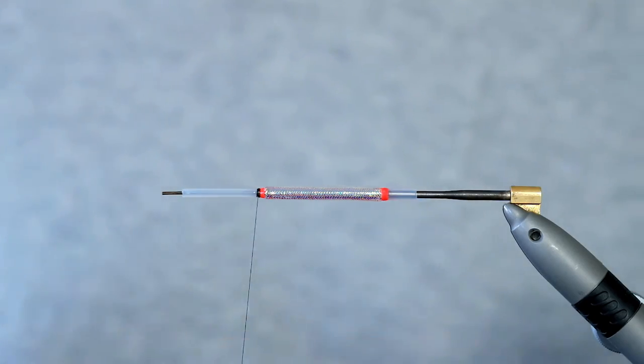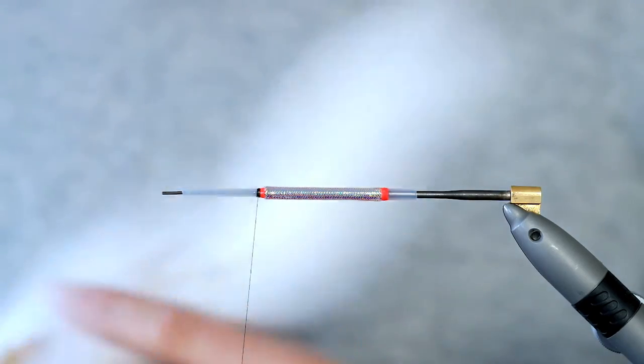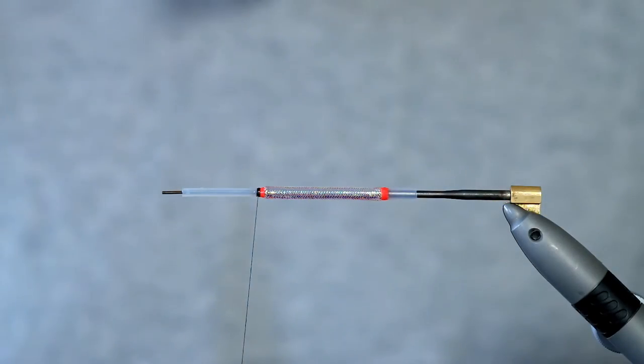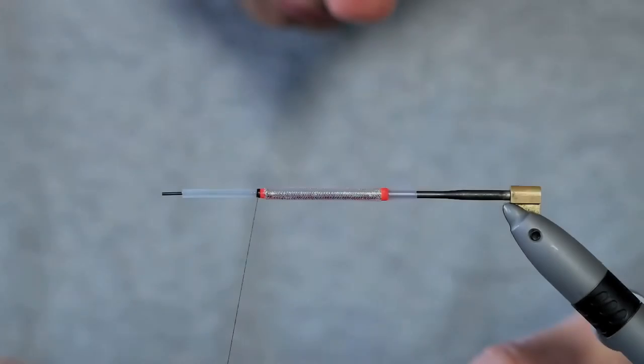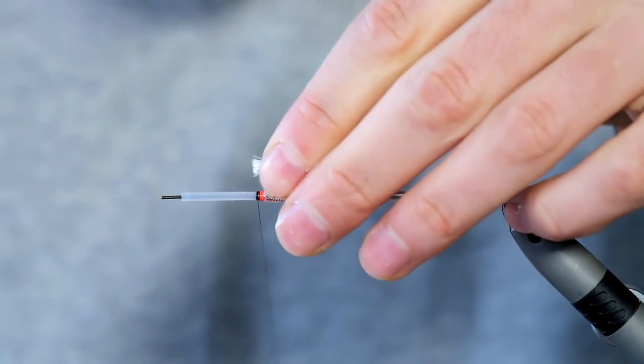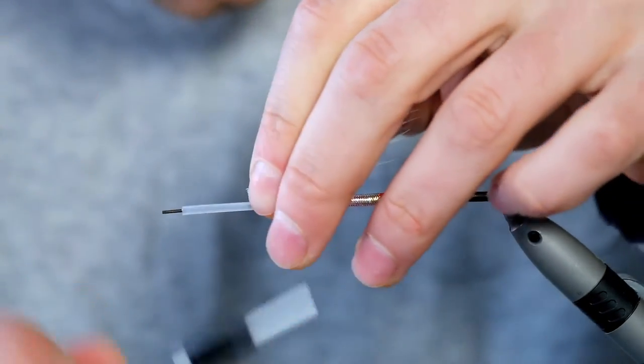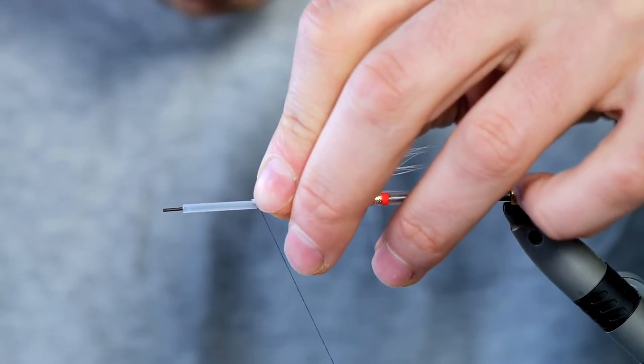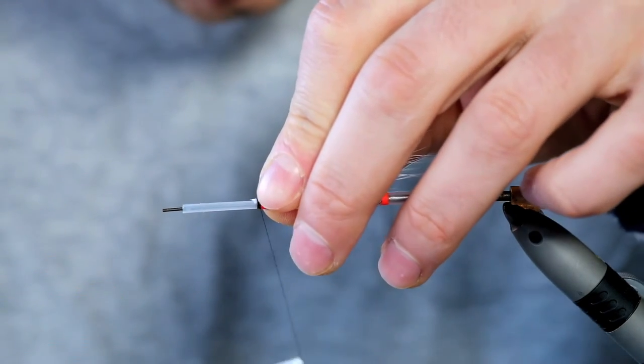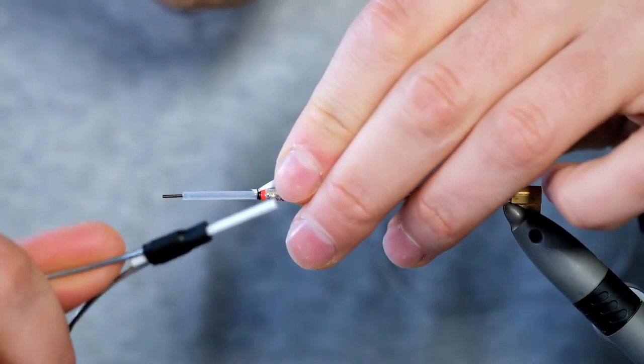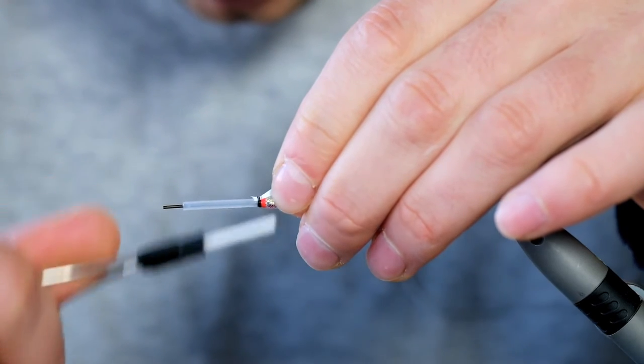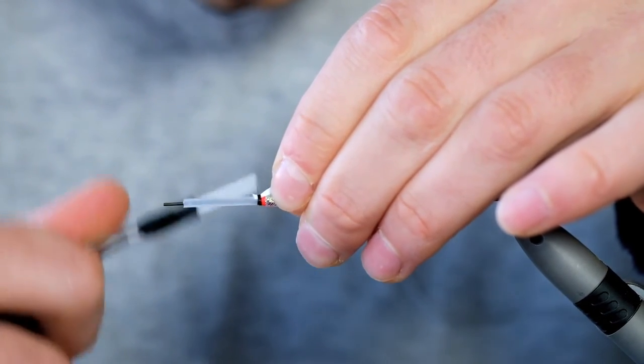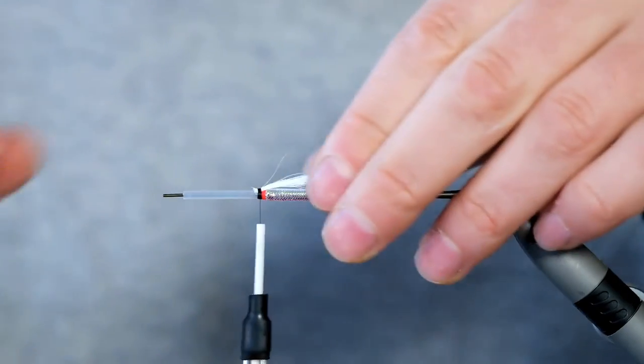So the first thing I'll do is I'll tie in some bucktail and when you look at the bucktail I want the upper softer hairs. So get your bucktail and tie it down. There we go.